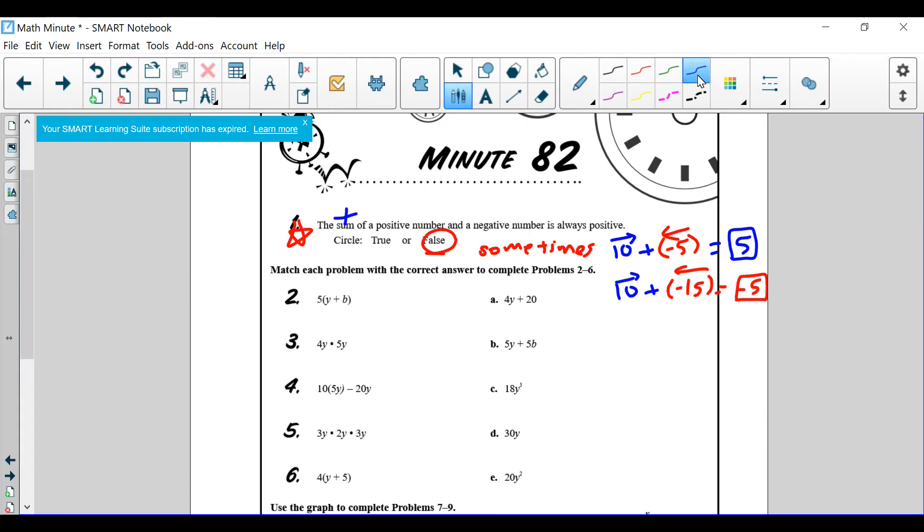Let's go ahead and talk about number 2. This one requires the distributive property, so make sure you distribute. 5 times y, that's gonna be 5y, plus 5 times b, that's gonna be 5b. Can we combine these terms? No, because they are unlike. So I'm just gonna write down which one that matches with, and that matches with b. So our answer is b.